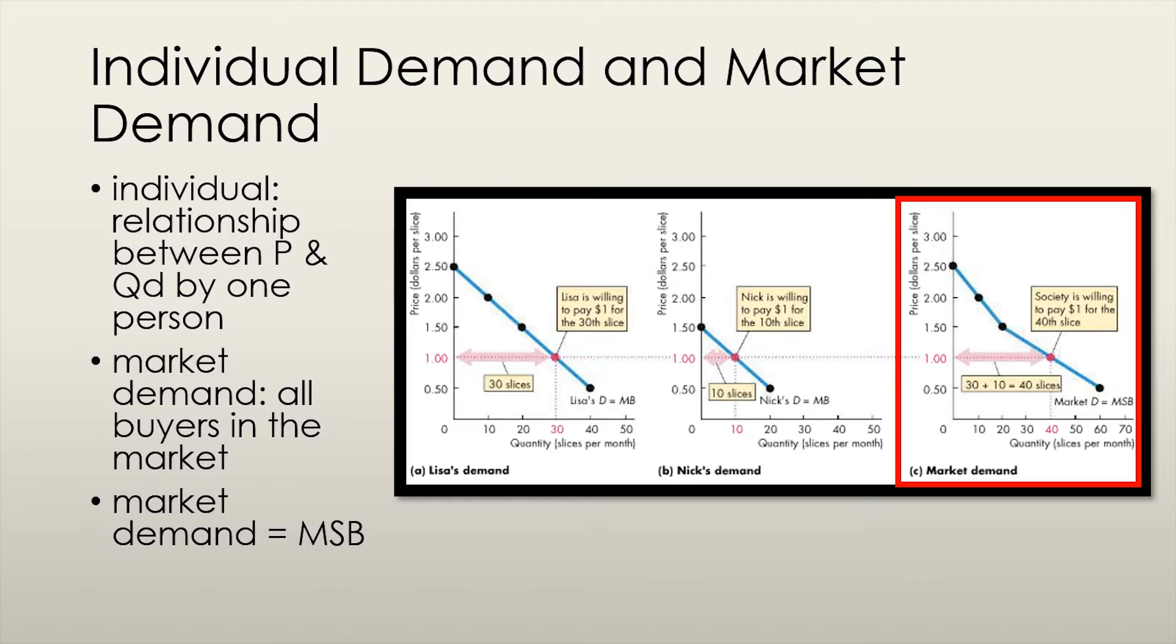Mathematically speaking, we're taking the horizontal sum of Lisa and Nick's demand curves. As we already know, each individual demand curve can be thought of as a marginal benefit curve, representing how much each individual values an additional unit of a good. The market demand curve can thus be thought of as the marginal social benefit curve, meaning that it represents how much the entire market values an additional unit of the good.